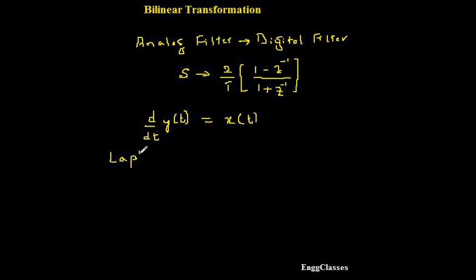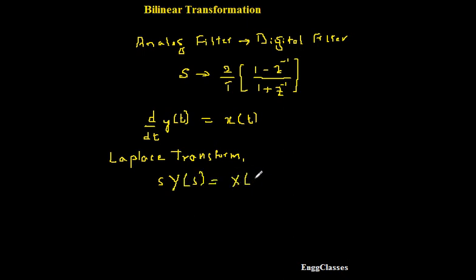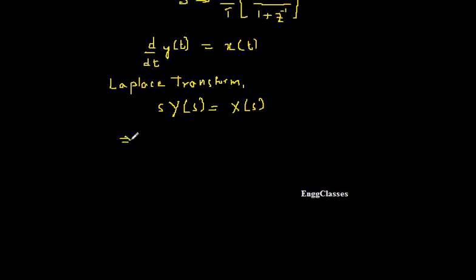So now what I do is take the Laplace transform on both sides. Taking Laplace transform on both sides: d/dt of y(t) gives s·Y(s), which is equal to X(s). The Laplace transform of x(t) is X(s) and the derivative of y(t) becomes s·Y(s). Rearranging, X(s) = s·Y(s). I got this — let me call this equation 2.